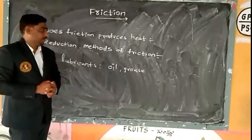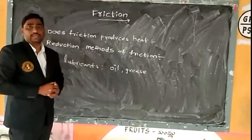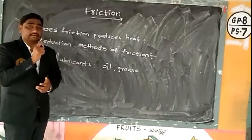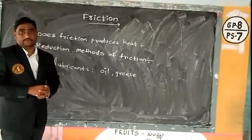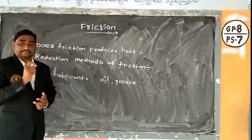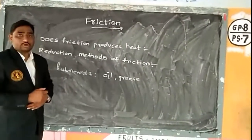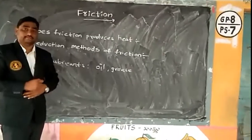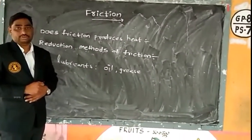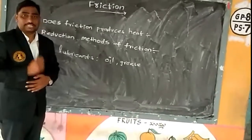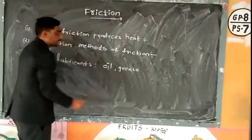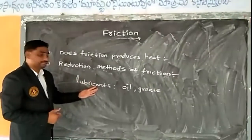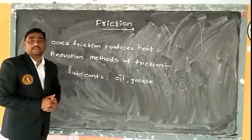Because of that thin layer, these moving parts are not going to be directly rubbed against each other. In other words, the interlocking of irregularities is reduced to a large extent. The reduction in interlocking of irregularities can minimize the frictional force. That is why we need to use oil, grease, etc. as lubricants.